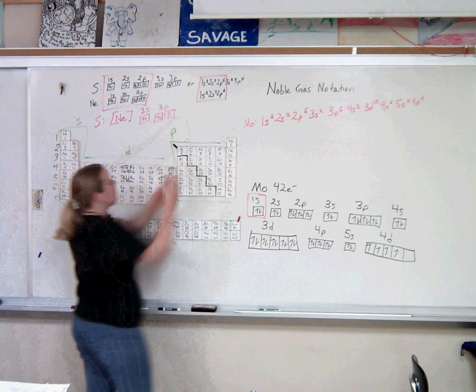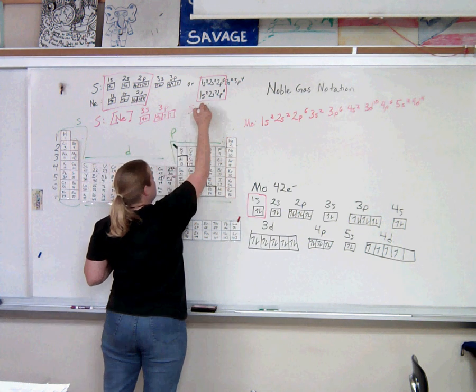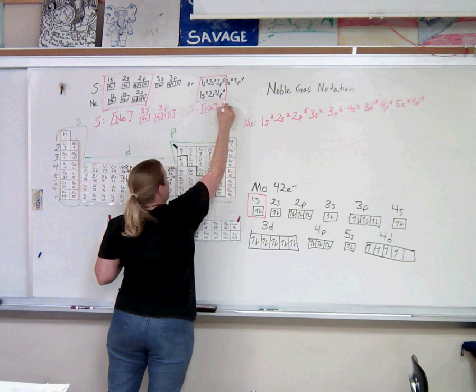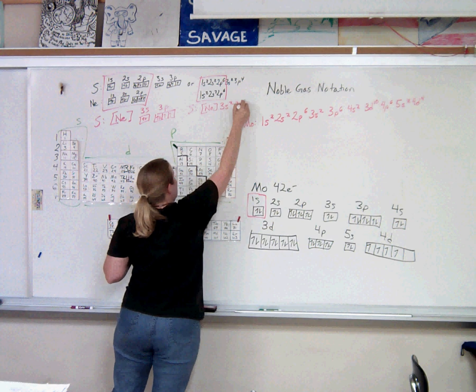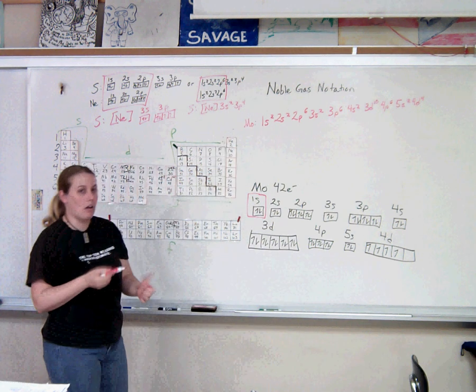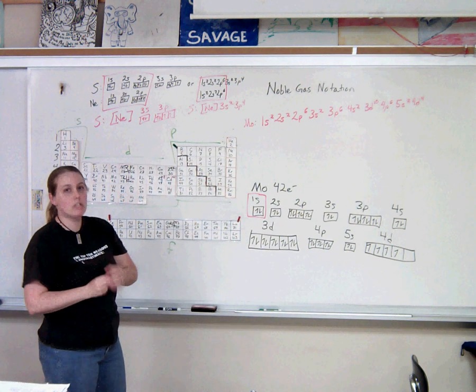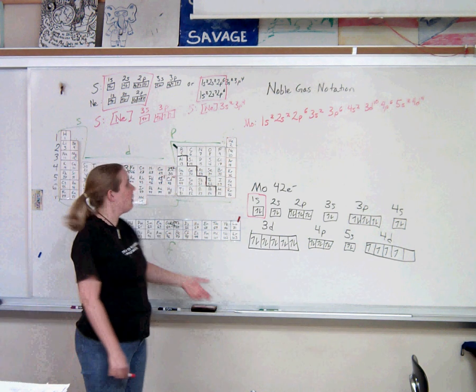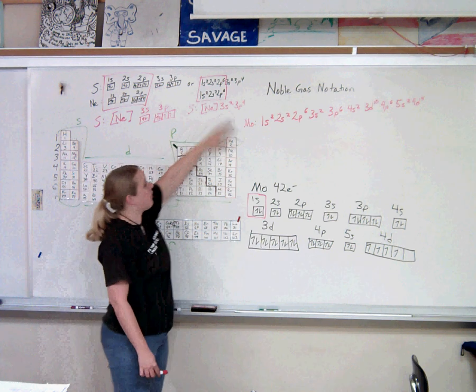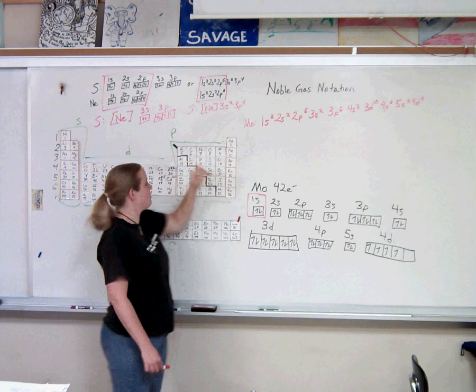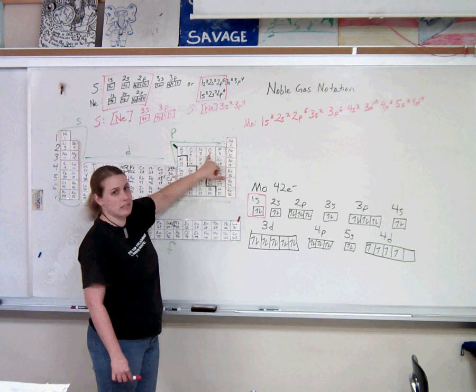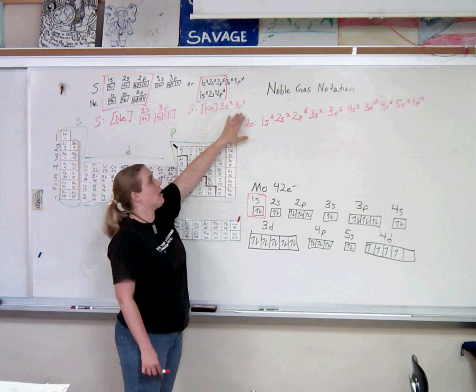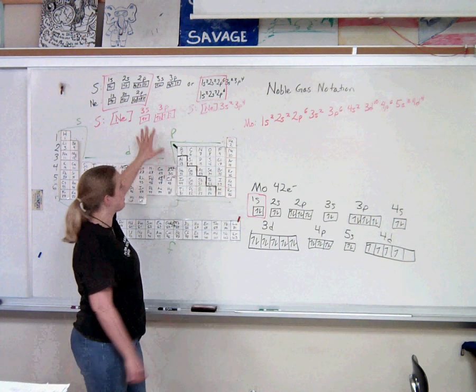And so sulfur is, again, neon. Neon stands for all of this, and then it's just 3s2, 3p4. This allows us to focus on just the valence electrons, which, when we get into chemical reactions and chemical bonding, are the electrons we care about anyway. So this tells us that sulfur has six valence electrons, which makes sense because it's in family 6A, and two of those are in 3s, and four in 3p. That is the noble gas notation.